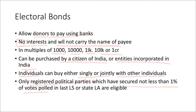What is the purpose of the electoral bond scheme? The main requirement is to address large amounts of cash flow in the political system. There is a political system of influence driven by large unaccounted cash flows, and the electoral bond scheme aims to account for this cash.